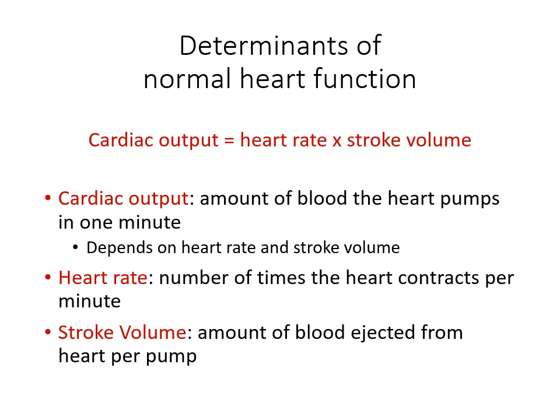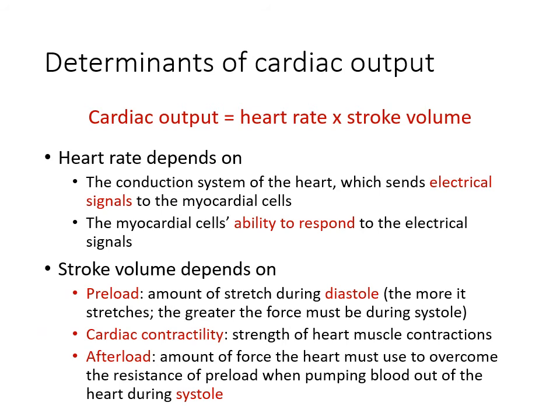Cardiac output is one of the determinants of normal heart function. It is the amount of blood the heart pumps out in one minute and is dependent on heart rate and stroke volume. Heart rate is the number of times the heart contracts per minute, and stroke volume is the amount of blood ejected from the heart per pump. Heart rate depends on the conduction system and the ability of myocardial cells to respond to electrical stimuli.